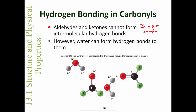Here's where it gets interesting. However, water can form hydrogen bonds to aldehydes and ketones. So if you have a ketone or aldehyde dissolved in water, there will be hydrogen bonding occurring. Oxygen always has two bonds and two lone pairs — no exceptions. The delta plus on the hydrogen of the water molecule hydrogen bonds to the lone pair on the oxygen of the carbonyl. So water can form hydrogen bonds to an aldehyde or ketone, but in a pure sample, an aldehyde or ketone cannot form intermolecular hydrogen bonds.